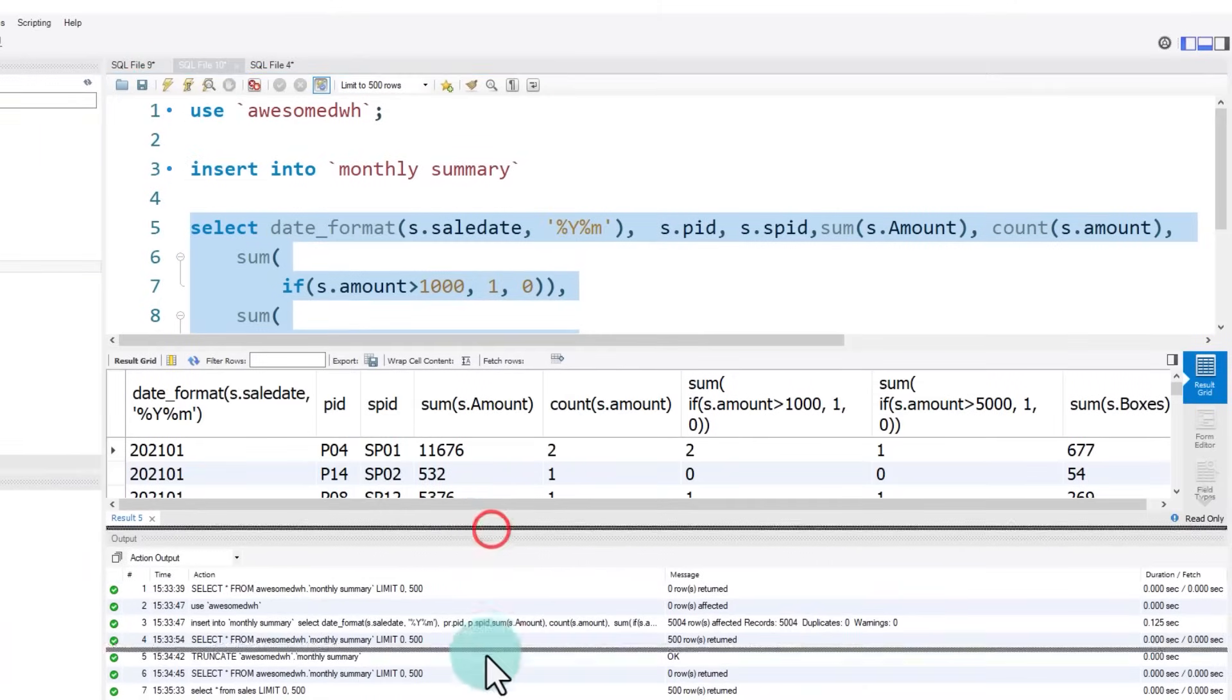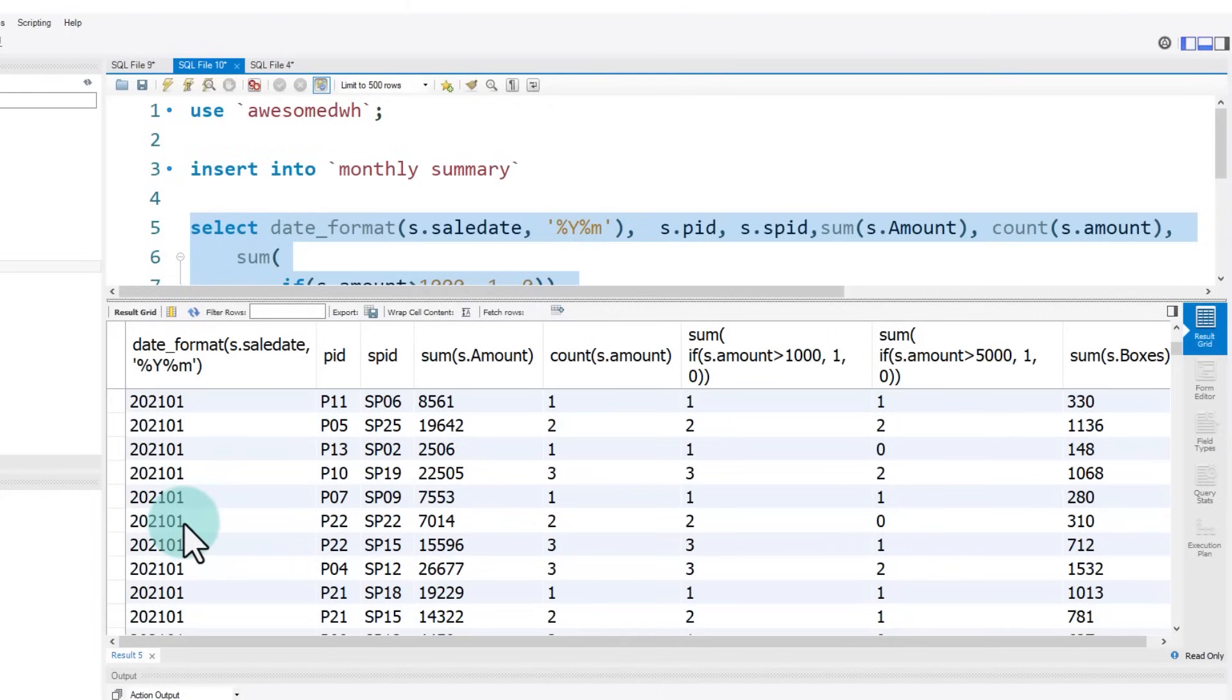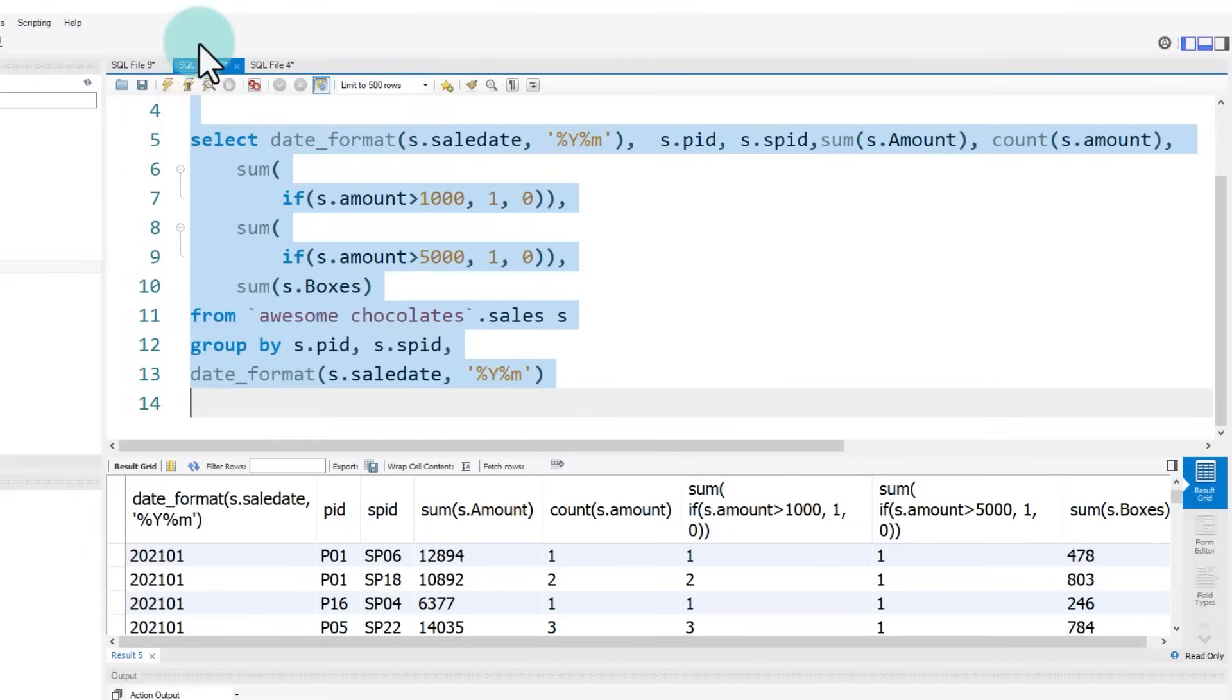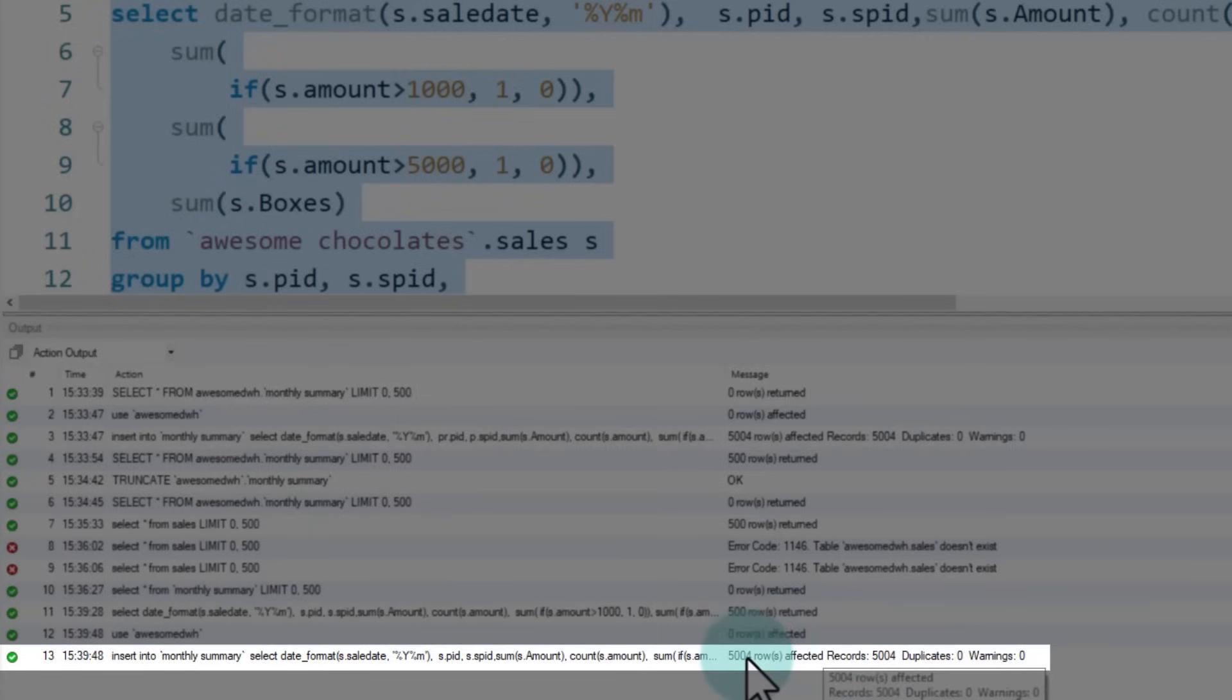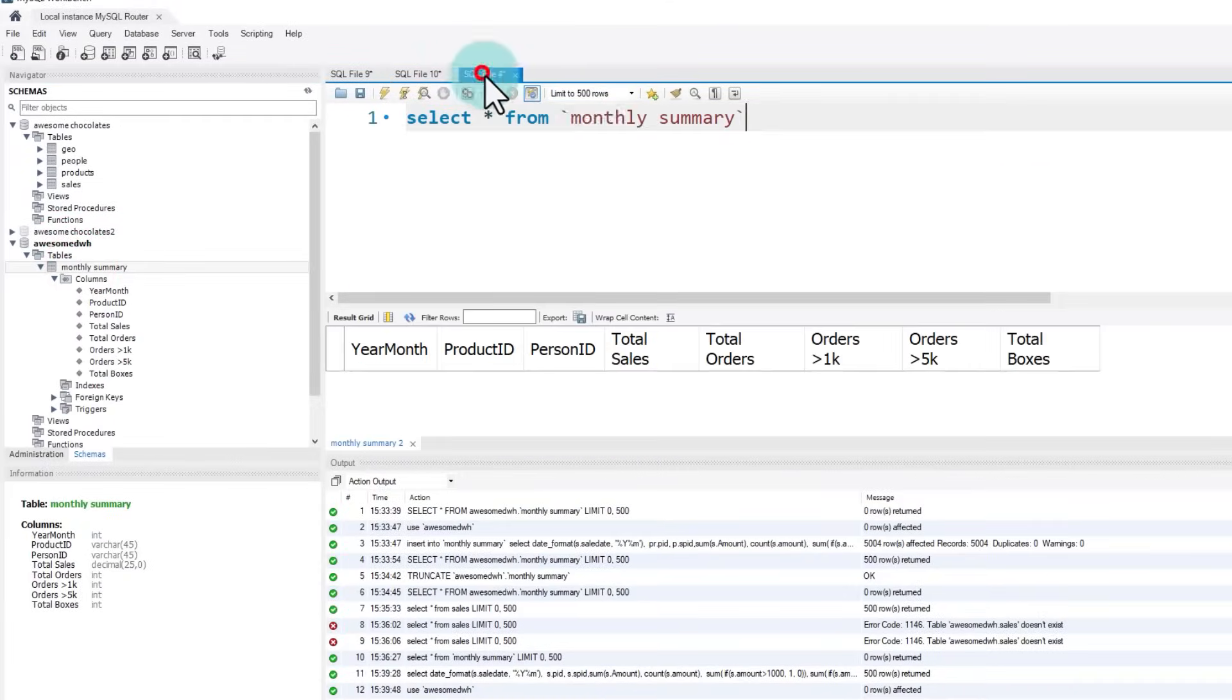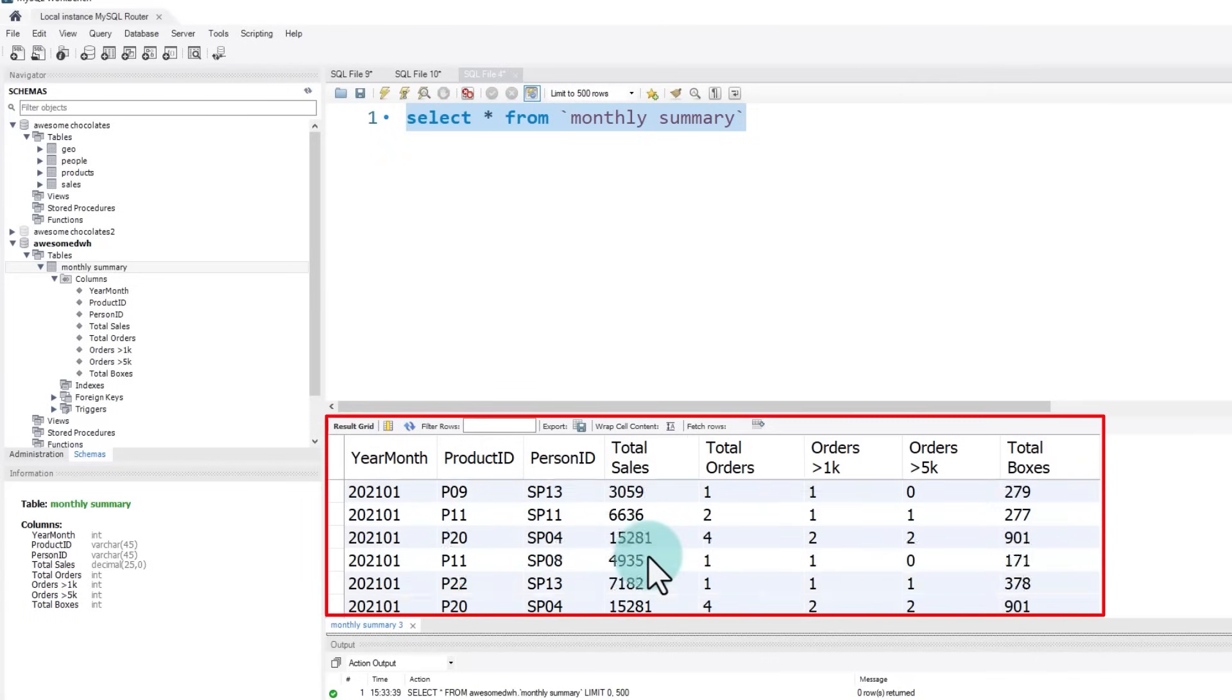If I just execute this portion alone, we'll get an aggregated view of the data. So this is how the grouping has been done. And I'll get all the information. Now I don't need to see this. All I want to do is take this select output and then insert that into the monthly summary. So when I select this entire script and run it, I'll get a message saying insert into this has done 5004 rows has been inserted. And then when I go to the monthly summary, and if I now execute this query, I will get the said report generated here for me.